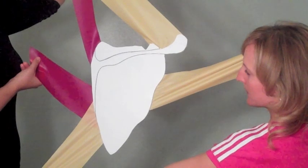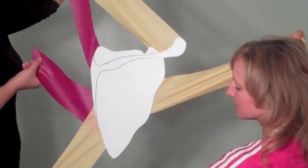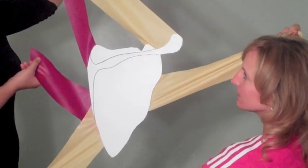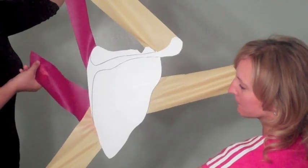Now we're going to demonstrate with our model here how the pull of these muscles produces upward rotation and downward rotation in the scapula.